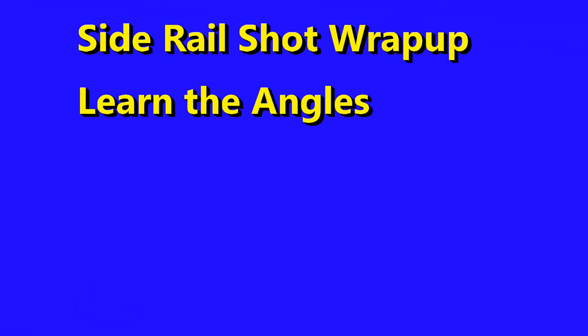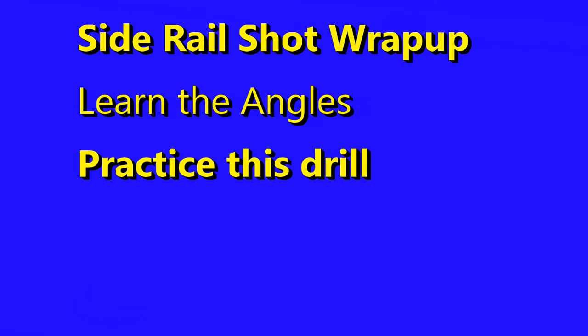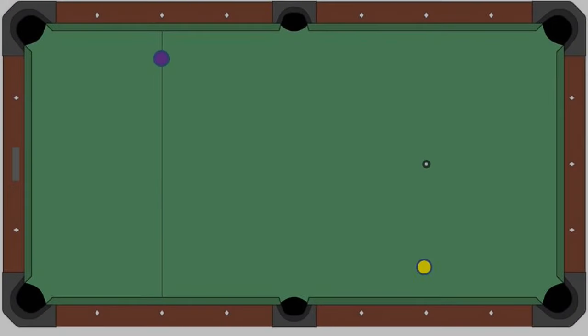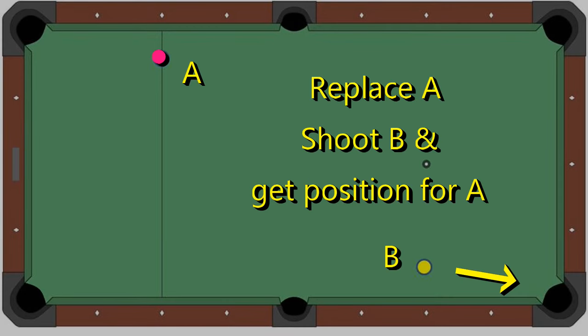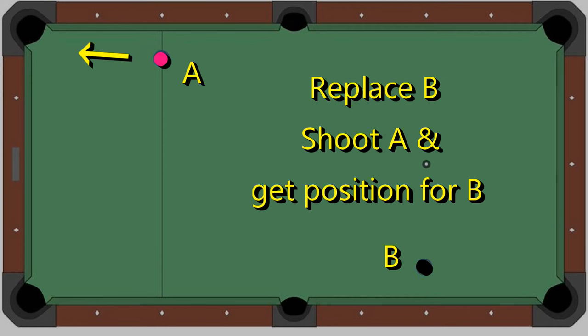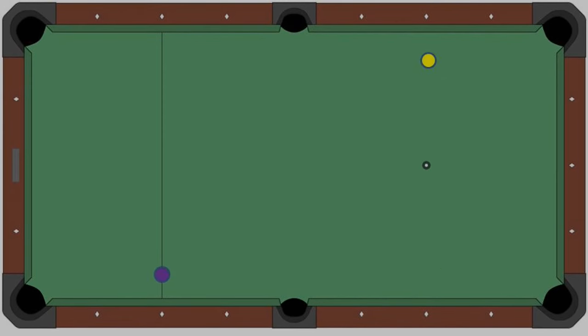Okay, that's it for side rail shots. Learn the angles, then do this practice drill that I suggest — cutting both to the left and to the right. Put the two balls up, take ball in hand, shoot one, then shoot the other, and keep putting balls up until you've done at least a rack. Then do another rack cutting the other way.